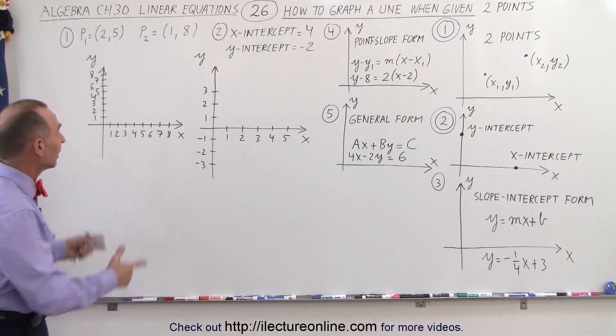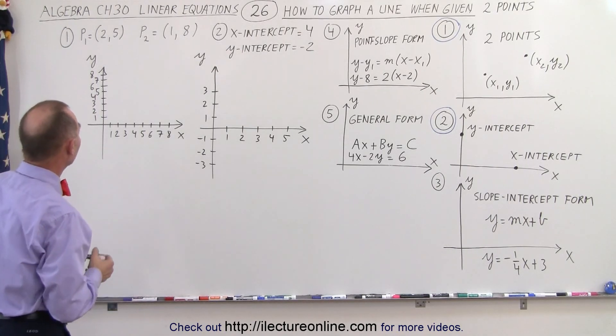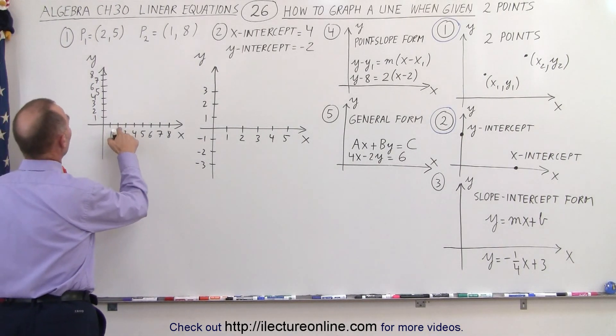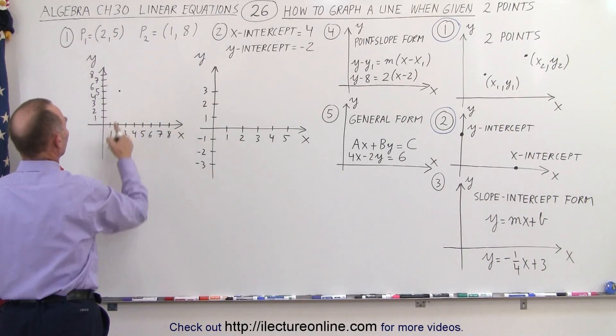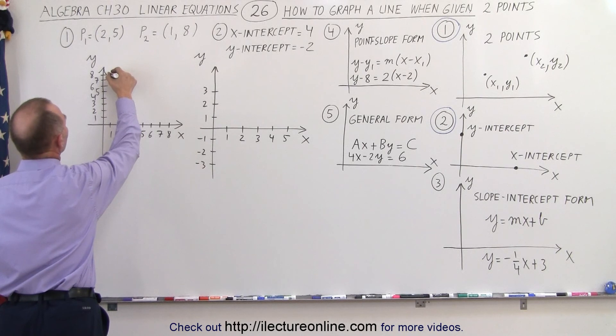So how do you graph the line that has those two points on them? We simply put the two points on the x, y plane, and then see what happens. The first point is x equals 2, and y equals 5. So that's the point x=2, y=5. The second point is x equals 1, y equals 8, which is right up here.